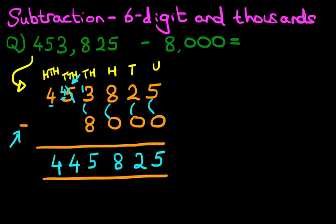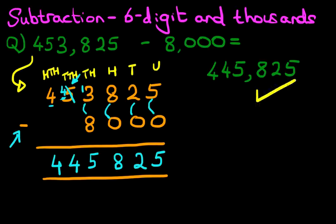And we have our answer. It is 445,825. That was nice and easy, wasn't it? That is correct, so let's give it a nice big tick. So that is how we do subtraction of a six-digit number and thousands using the vertical format.